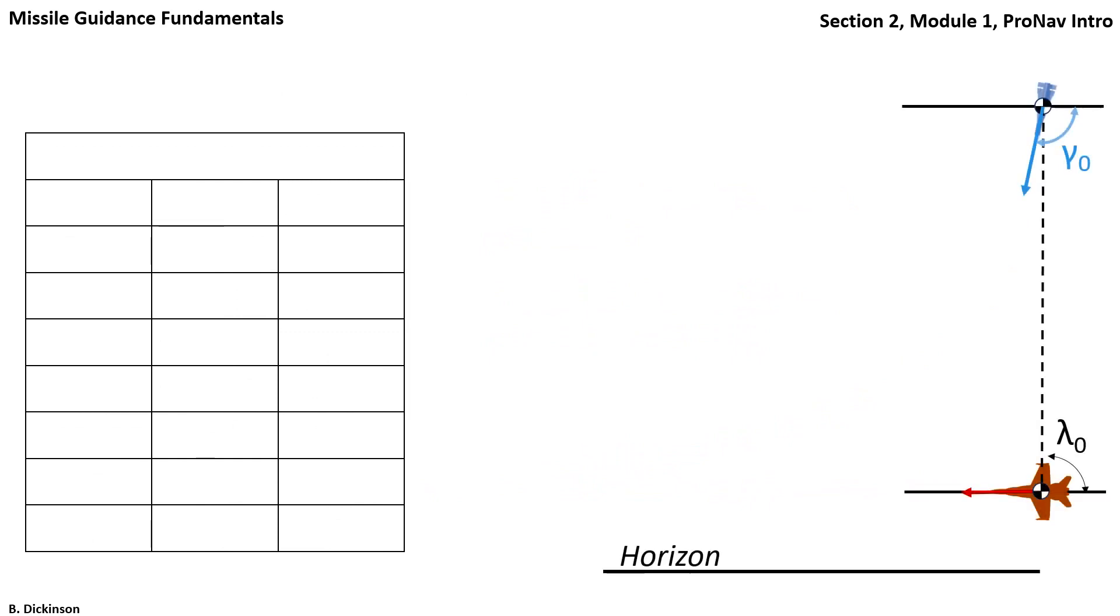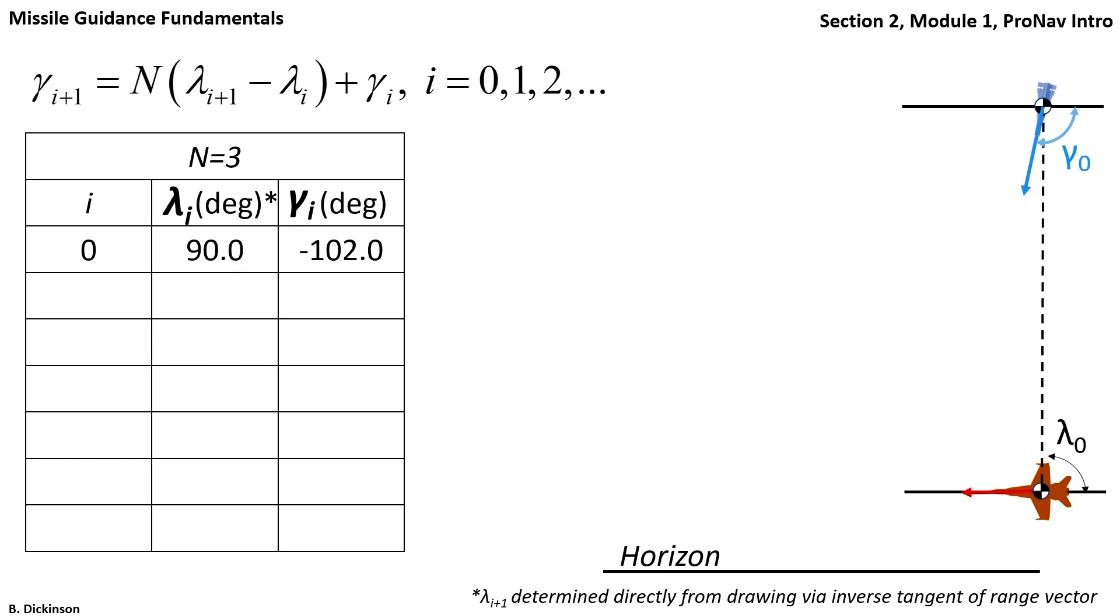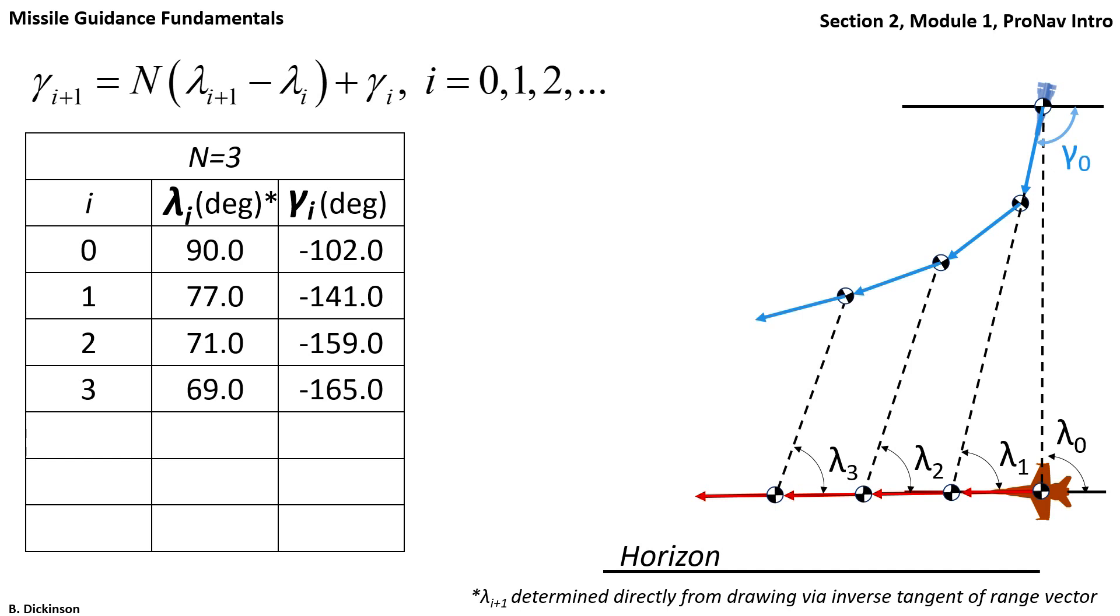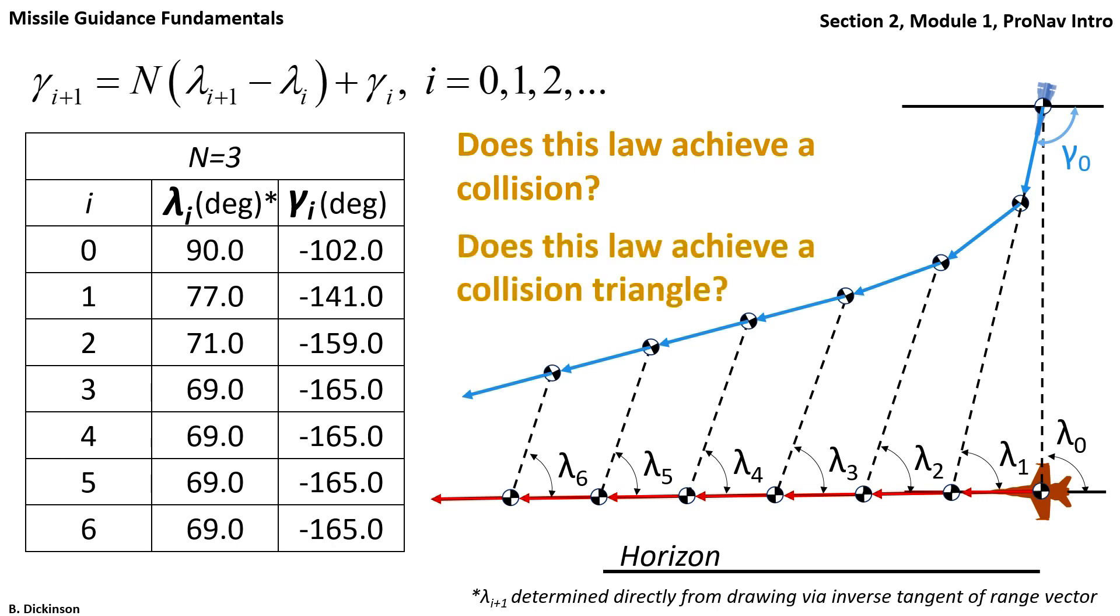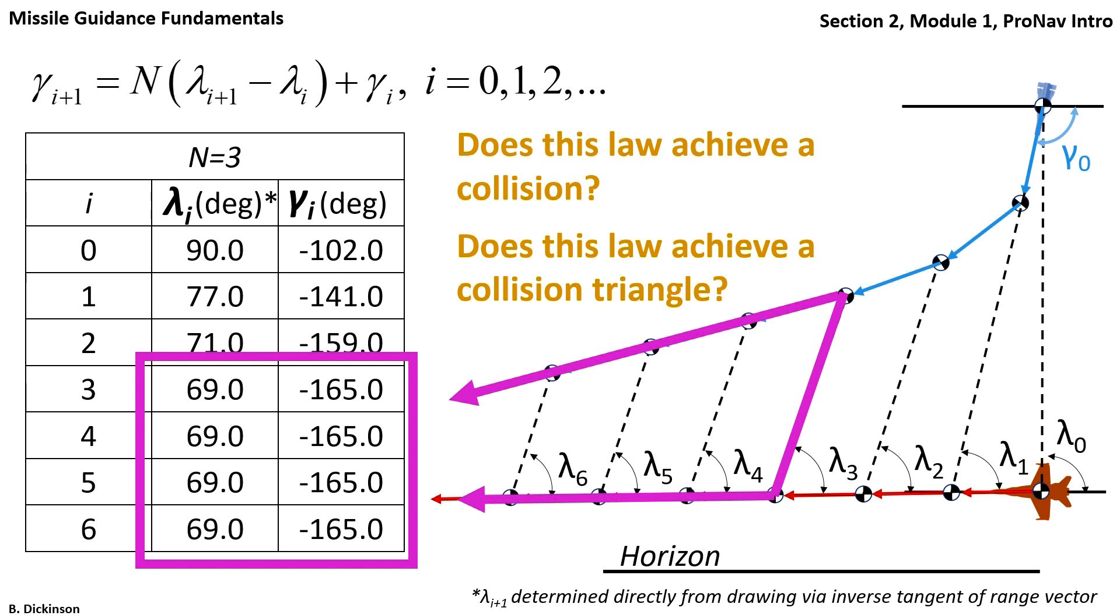Let's set n equal to three. And then we have our same initial conditions and we'll proceed as before. So at time t one, because we have n equal to three, we get three times the change in the flight path angle. Notice the big difference between i equals zero and i equals one in that flight path angle. As we just progressed to now i equals two, that change in flight path angle actually decreased. And as we go to i equals three, the change was even less. And on the fourth time step, it doesn't change. And it doesn't change. And it continues on that way. Does the law achieve a collision? Does this law achieve a collision triangle? Absolutely. There it is. At time t three, lambda is constant thereafter. Hence, we are on a collision triangle. And at a future point in time, collision will occur.